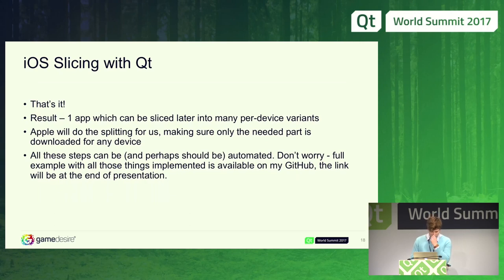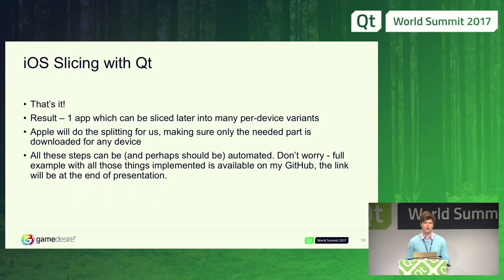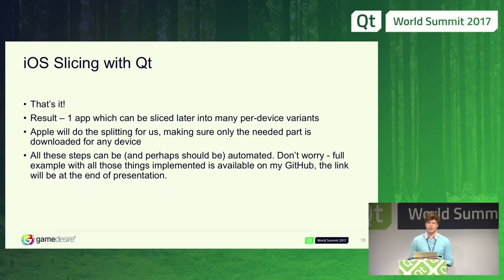Of course, it would be nice to automate all these steps — running the RCC compiler command and automatically recompiling images when QRC resources change. In my GitHub project this is already implemented as a separate Qt sub-project.